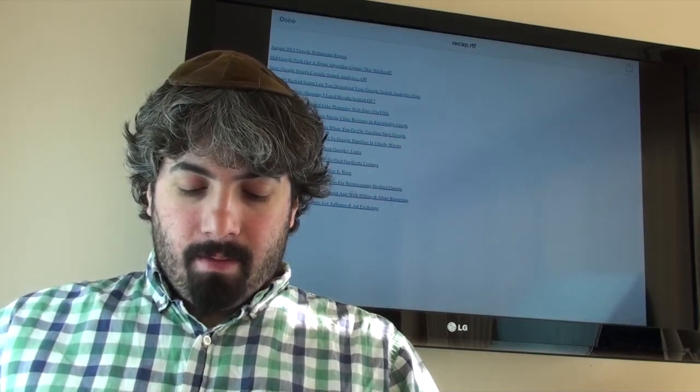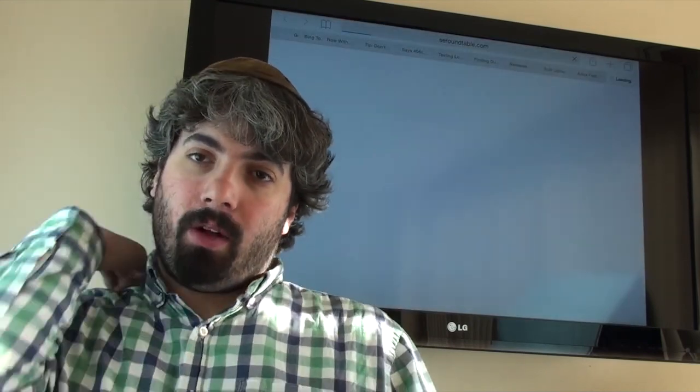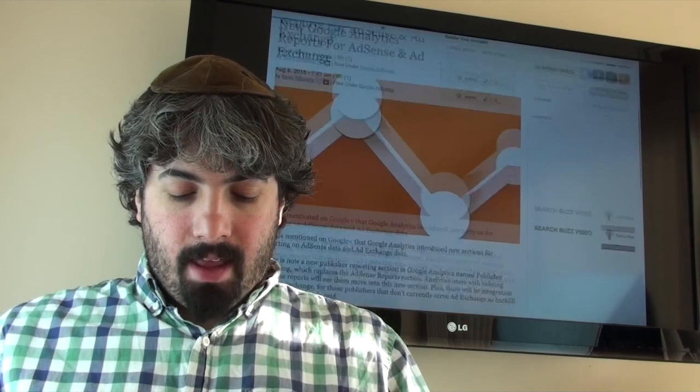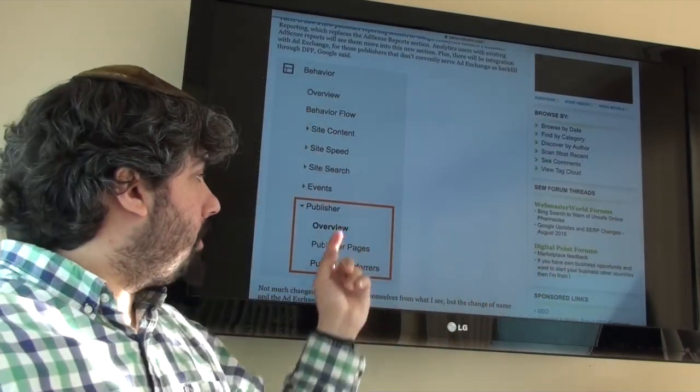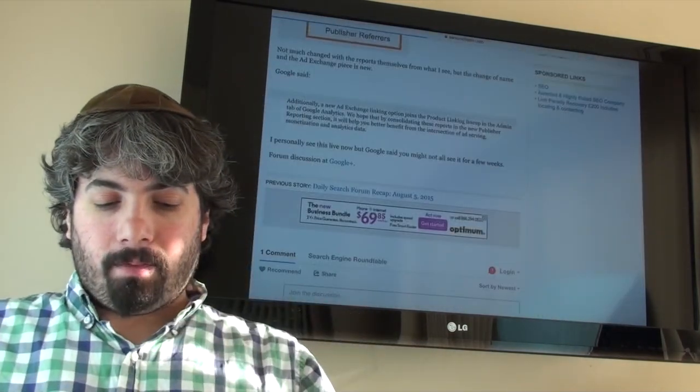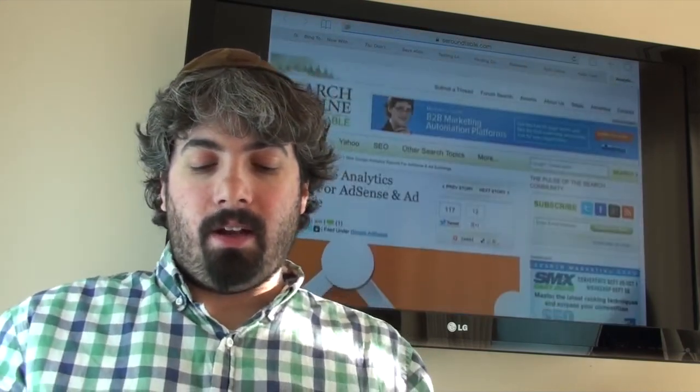And finally, Google Analytics updated their AdSense reporting engine. They now call it, they renamed it to the publisher report area. And in there, here's the publisher report. It's actually pretty much the same reports, but they're just called publisher instead of AdSense. And in there they also added the ad exchange linking options. So if you're using ad exchange as well, I think that data could go into there as well.